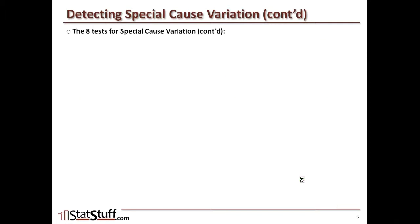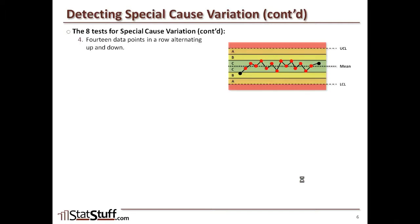The fourth test: 14 data points in a row that are alternating up and down. From a normal perspective, we'd expect to see two data points going in the same direction at some point across 14 observations.